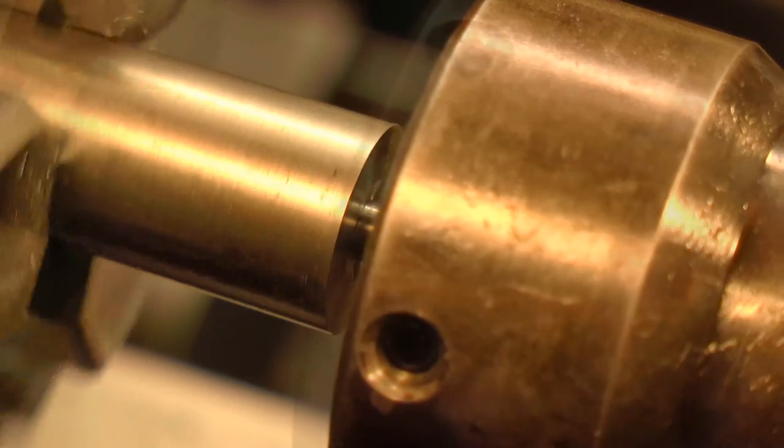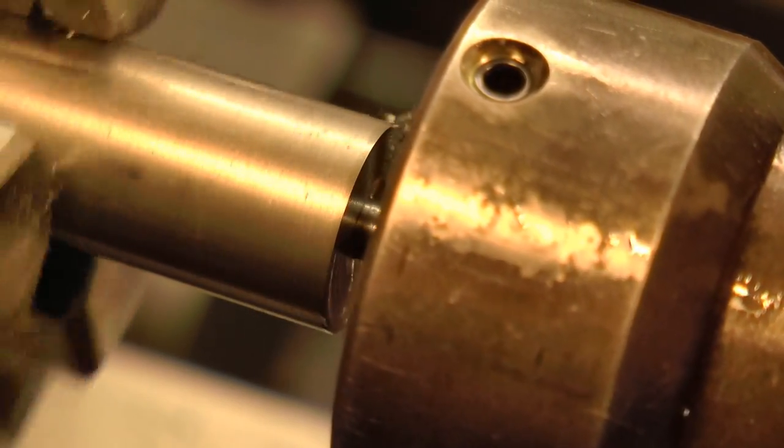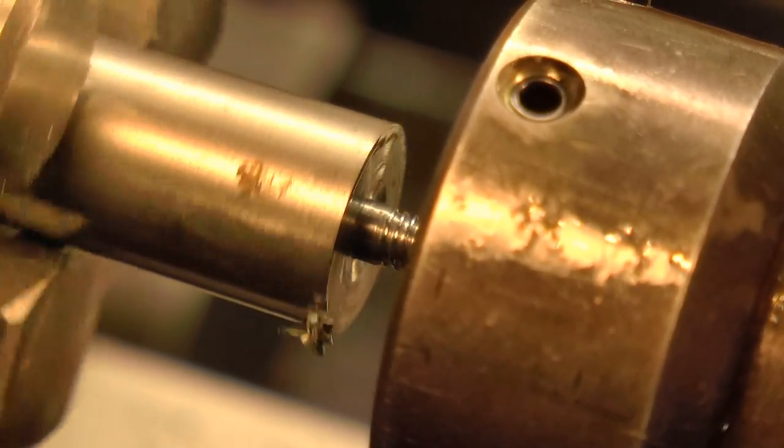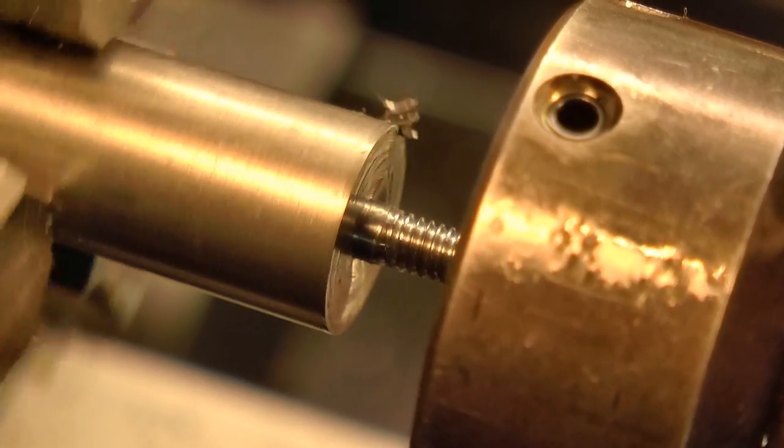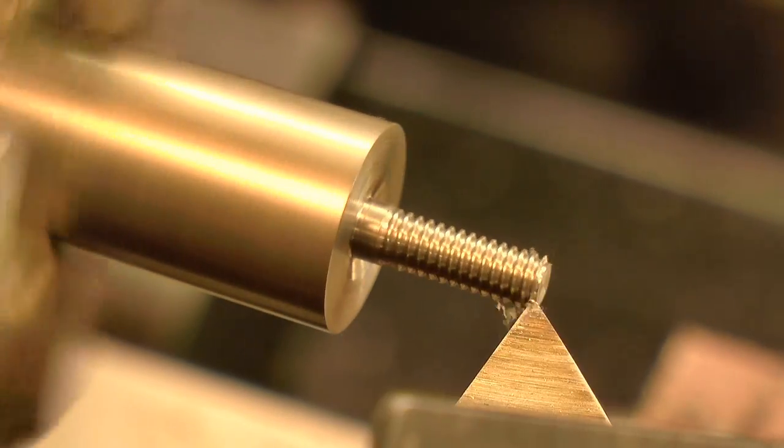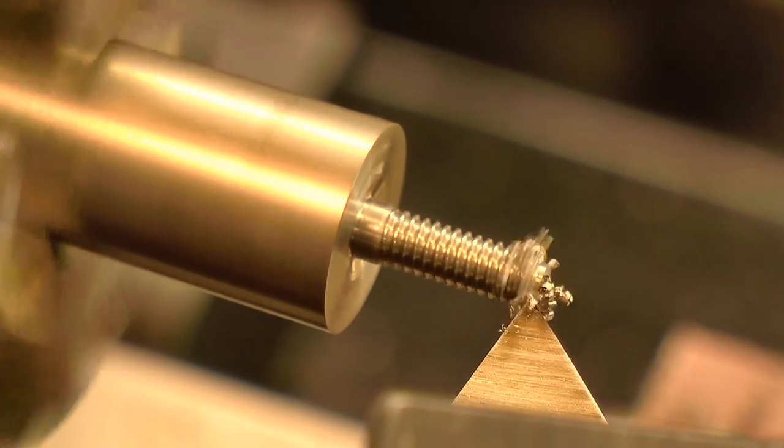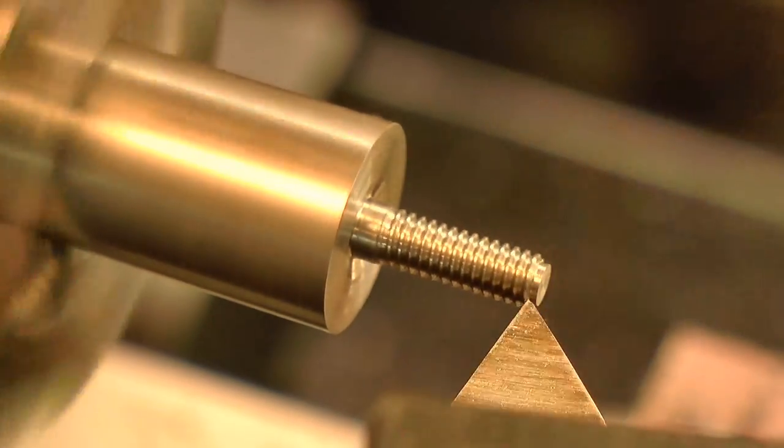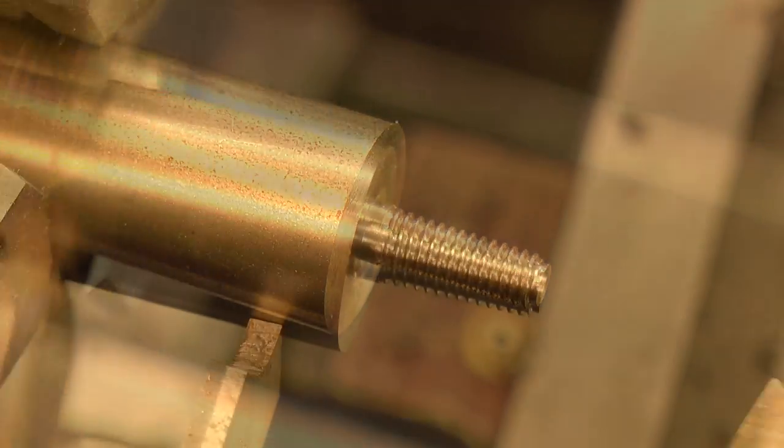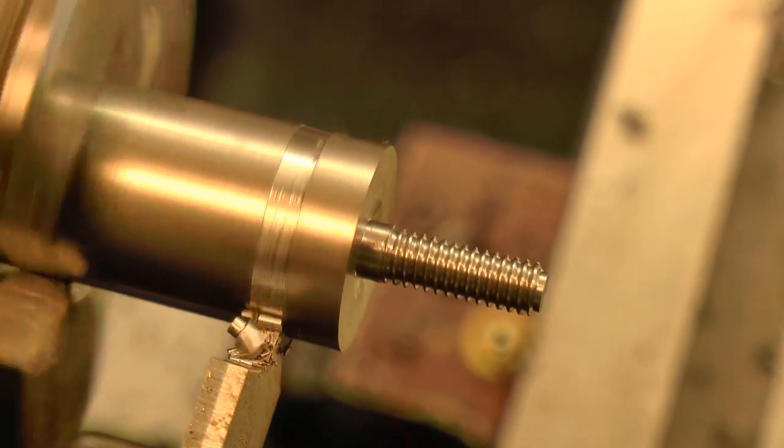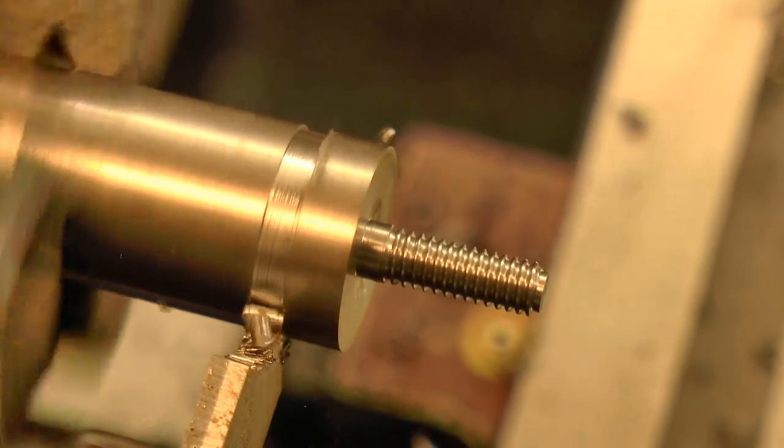And finally I used a die to cut the thread. I parted them off just a little bit over length, to leave a bit of metal for finishing.